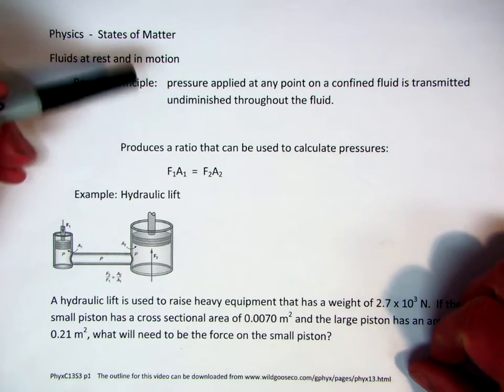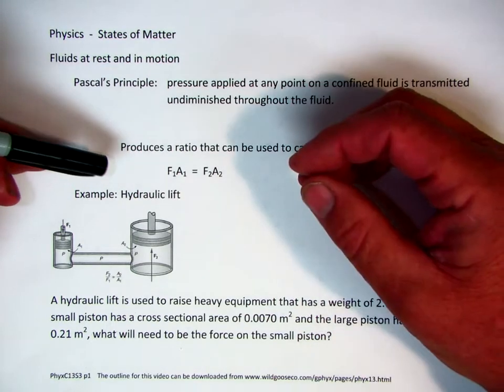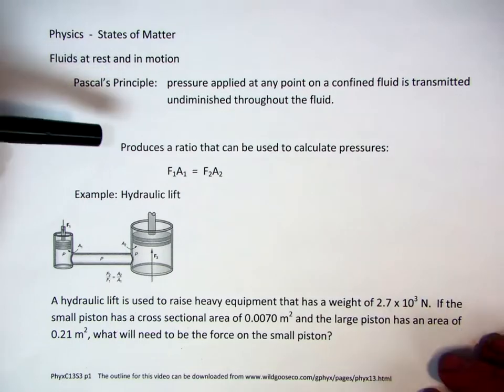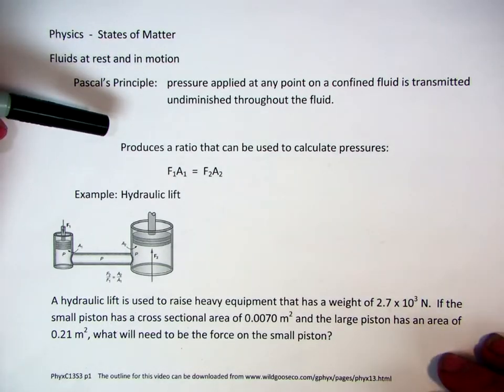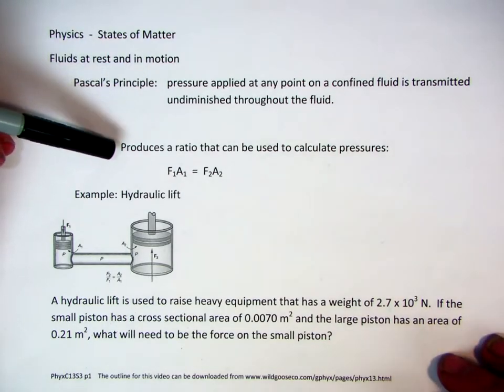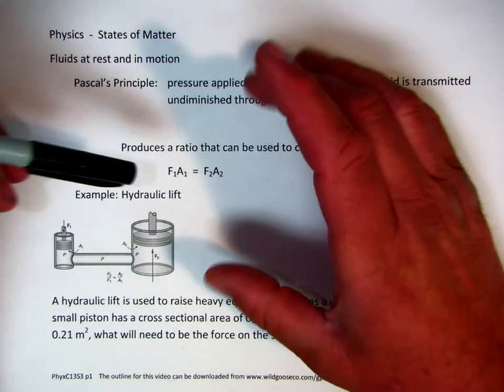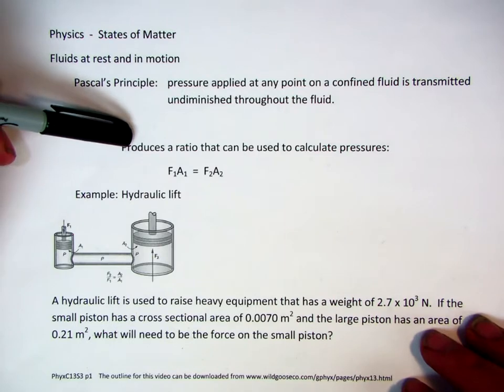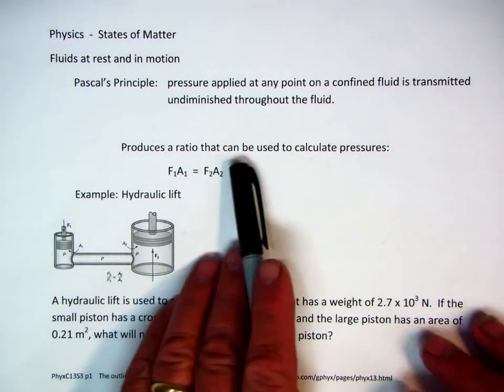Now in my classroom I use what we call a Cartesian diver, where I restrict water inside a two liter bottle. I put a floating eyedropper inside and as you pressurize it, it tends to collapse the air inside the eyedropper and it tends to drop.